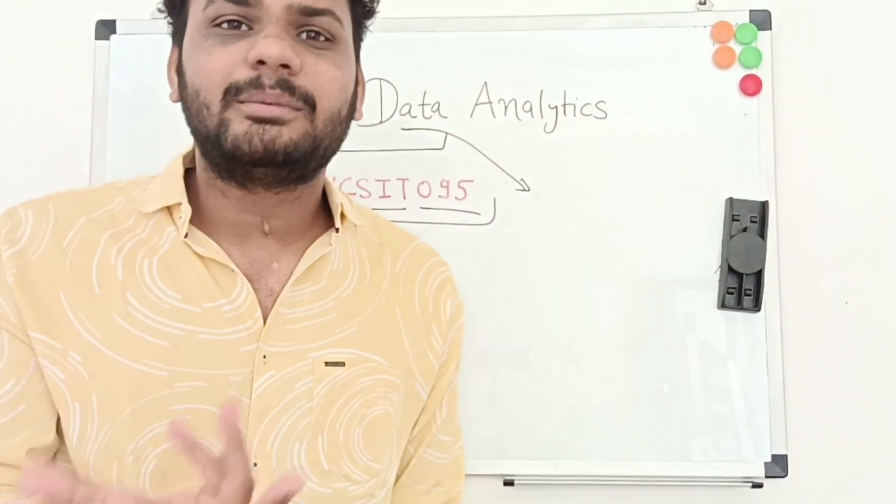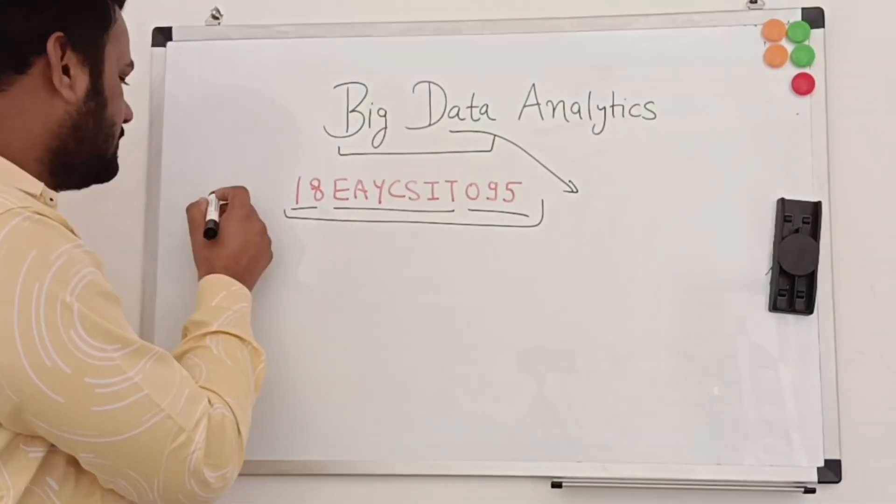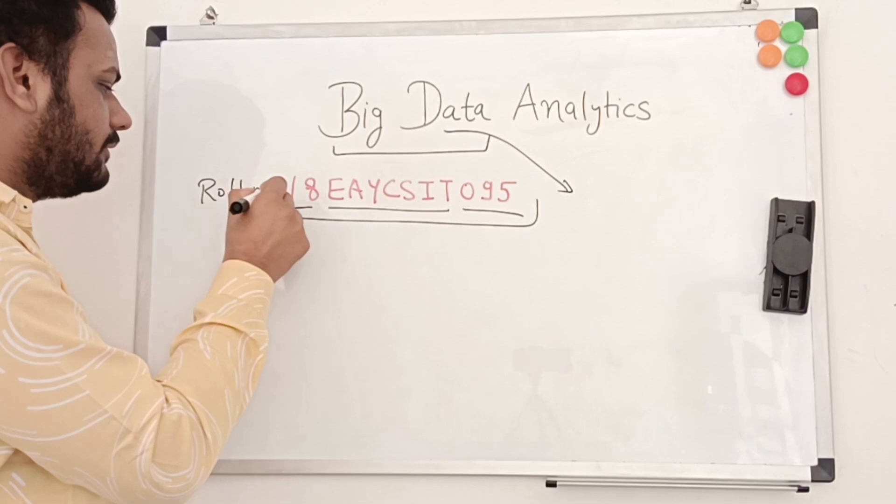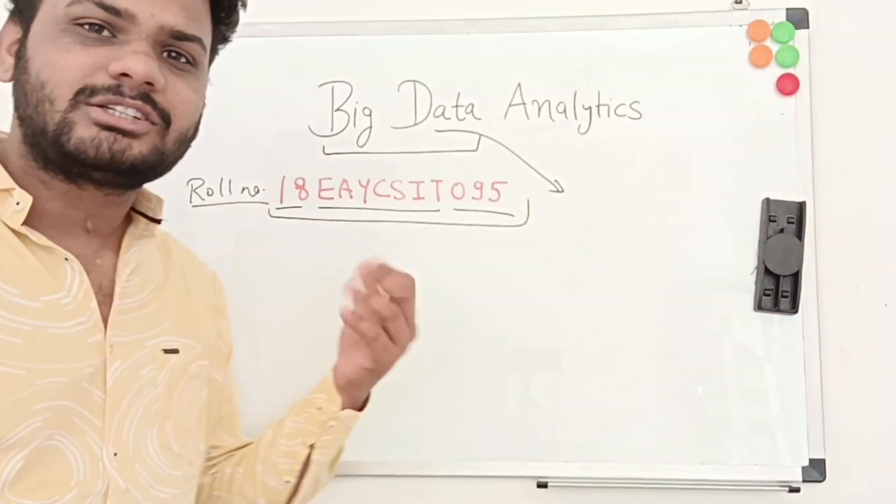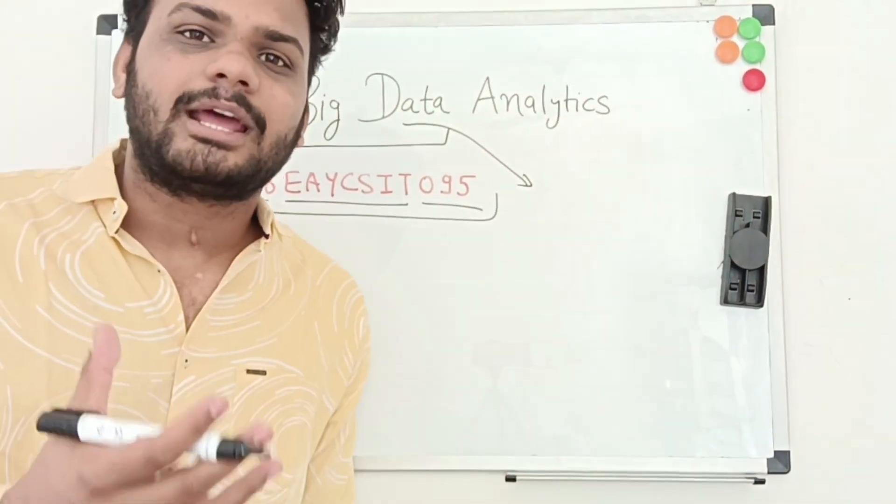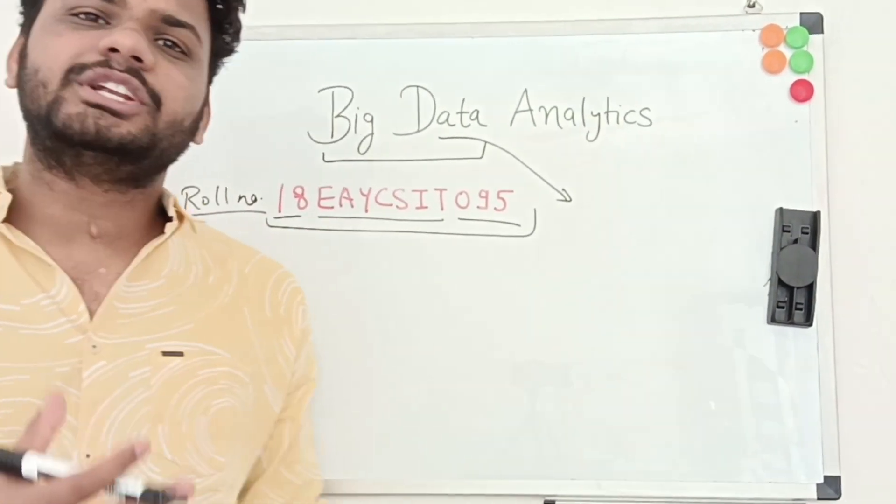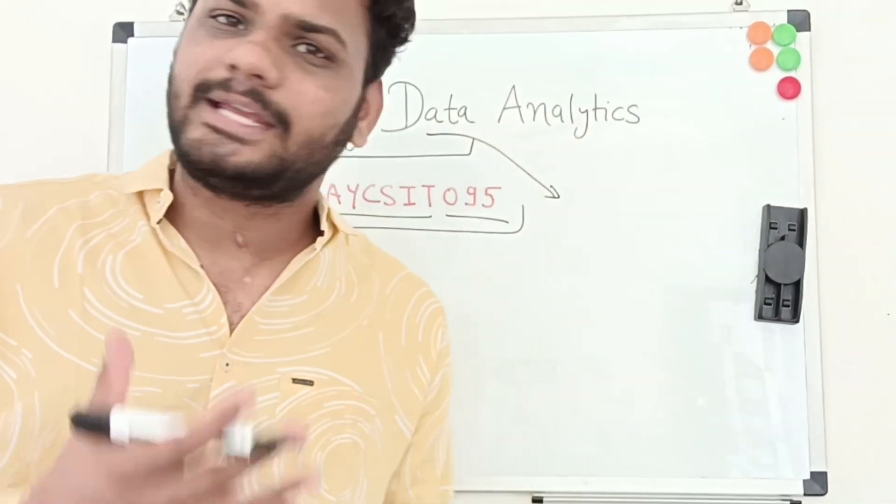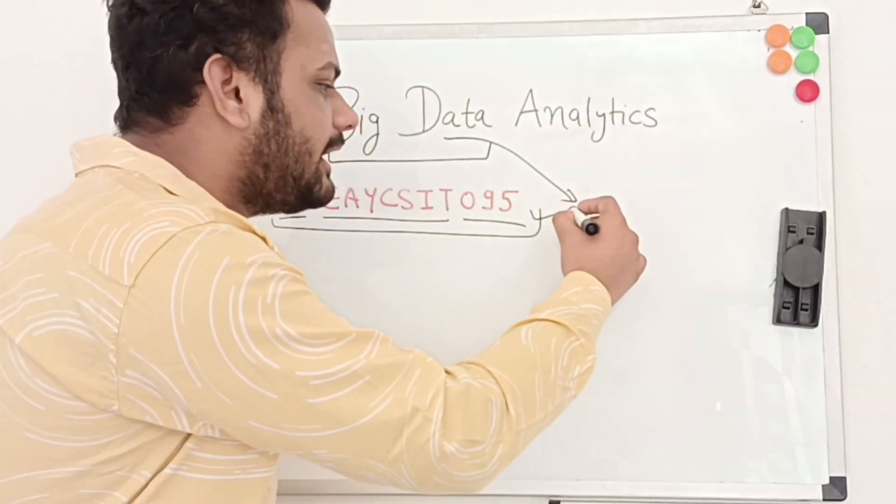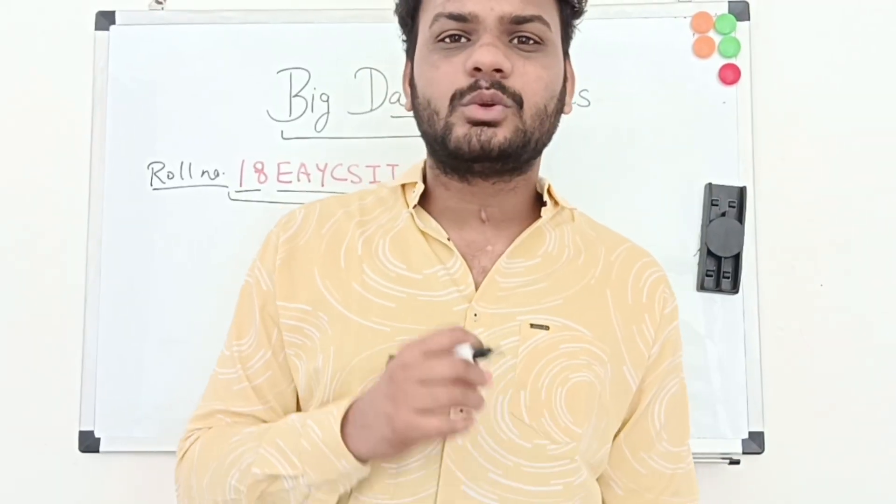But if I write 'roll number', now you can tell what it is. Yes, we know this is a student's roll number. Through this roll number I can get their rating, see their result. So in this way it becomes meaningful - this is data.